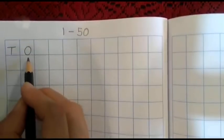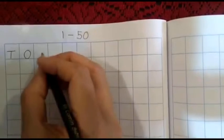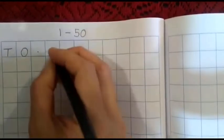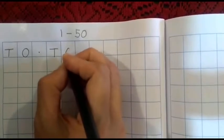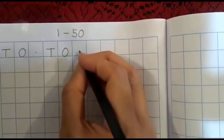T stands for tens unit and O stands for ones unit. In the next box we are going to give a dot then again T and O because we will write the numbers in tens and ones unit.